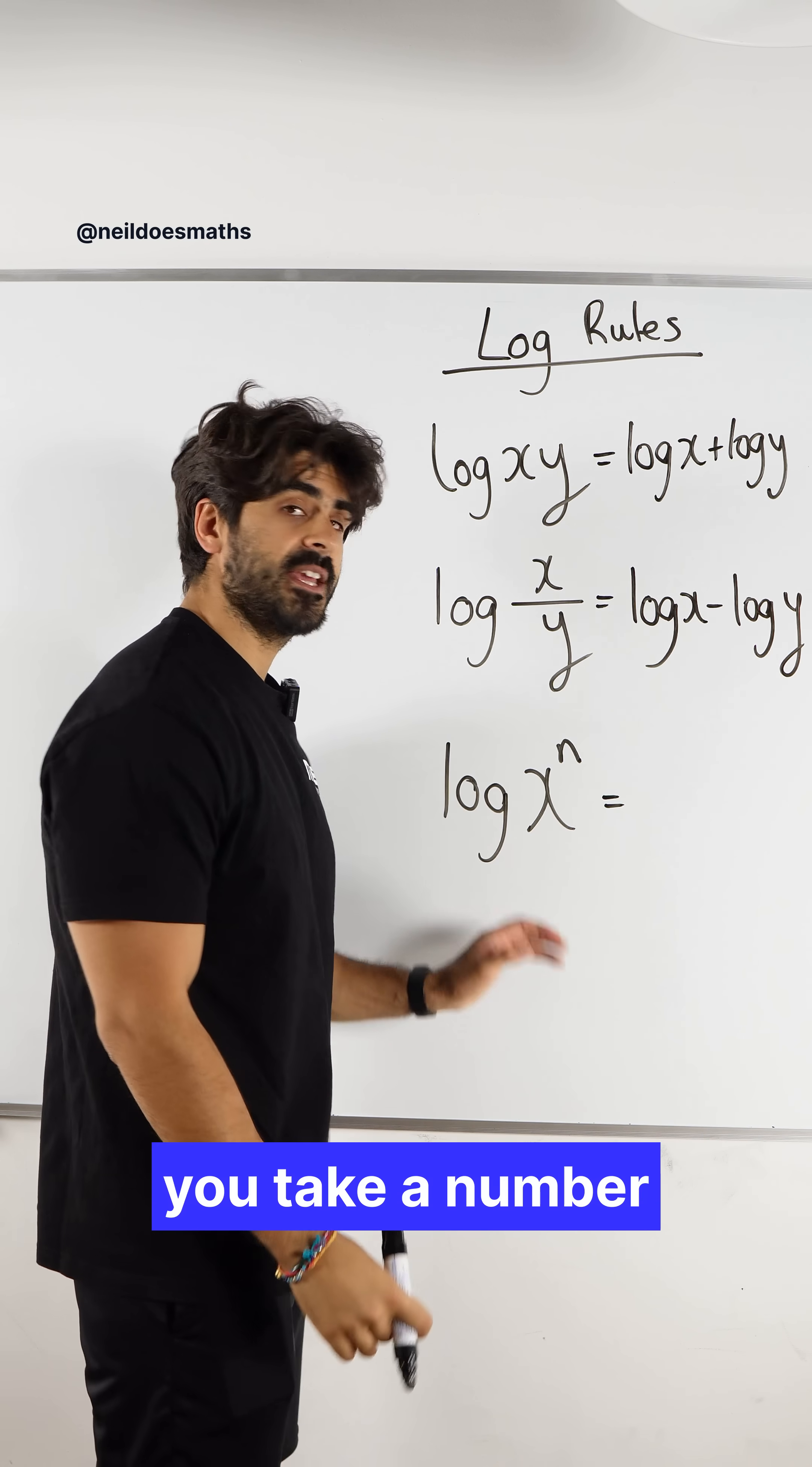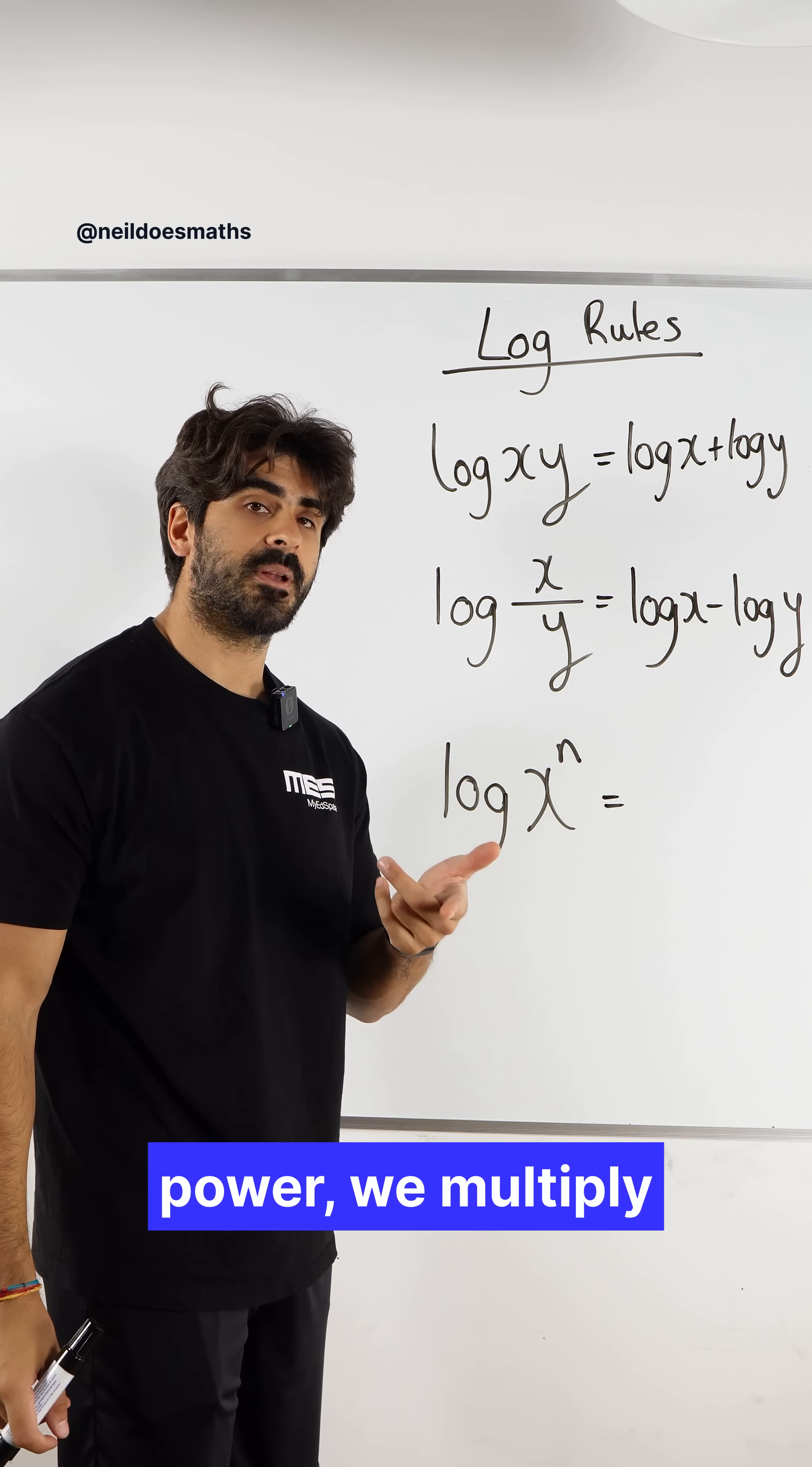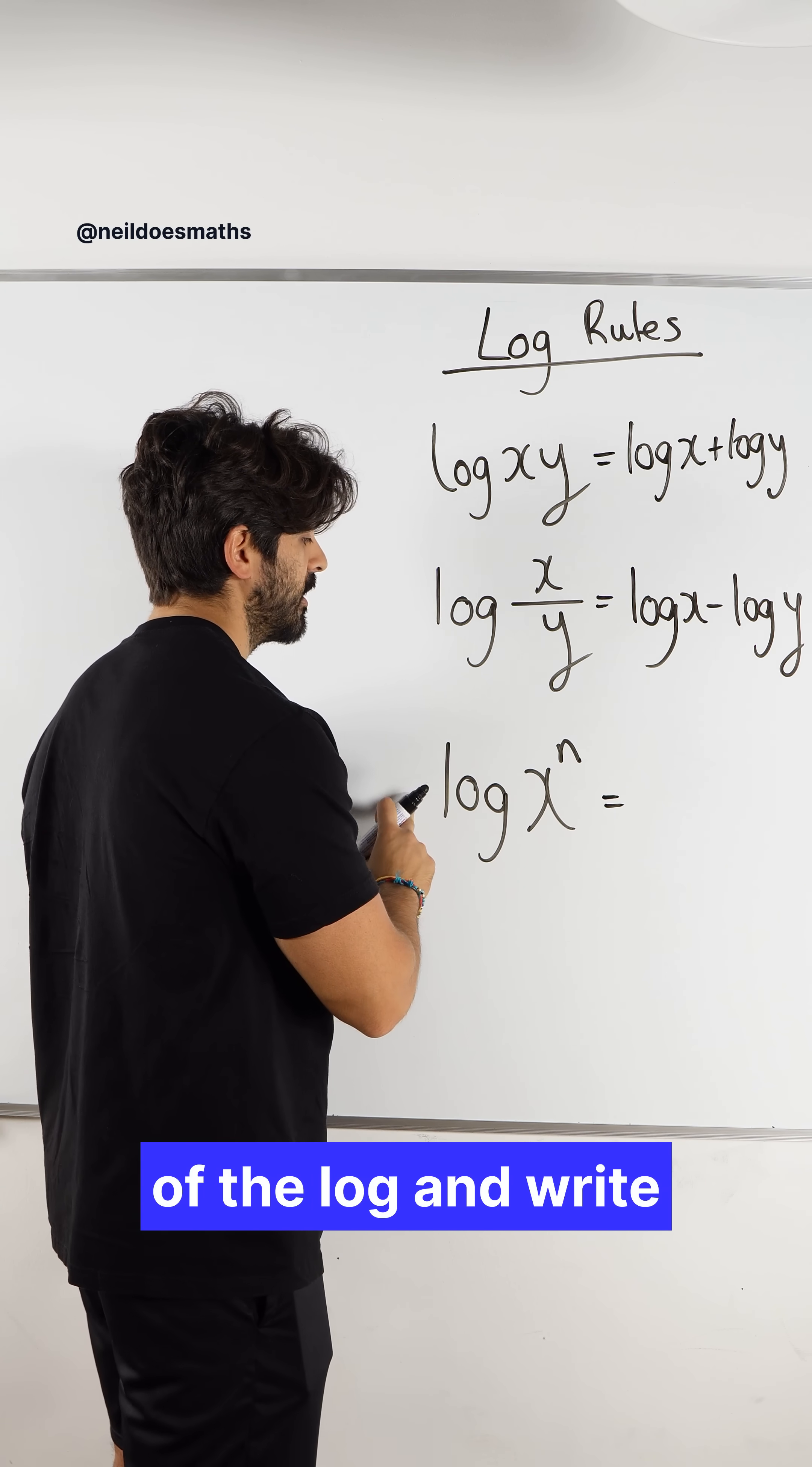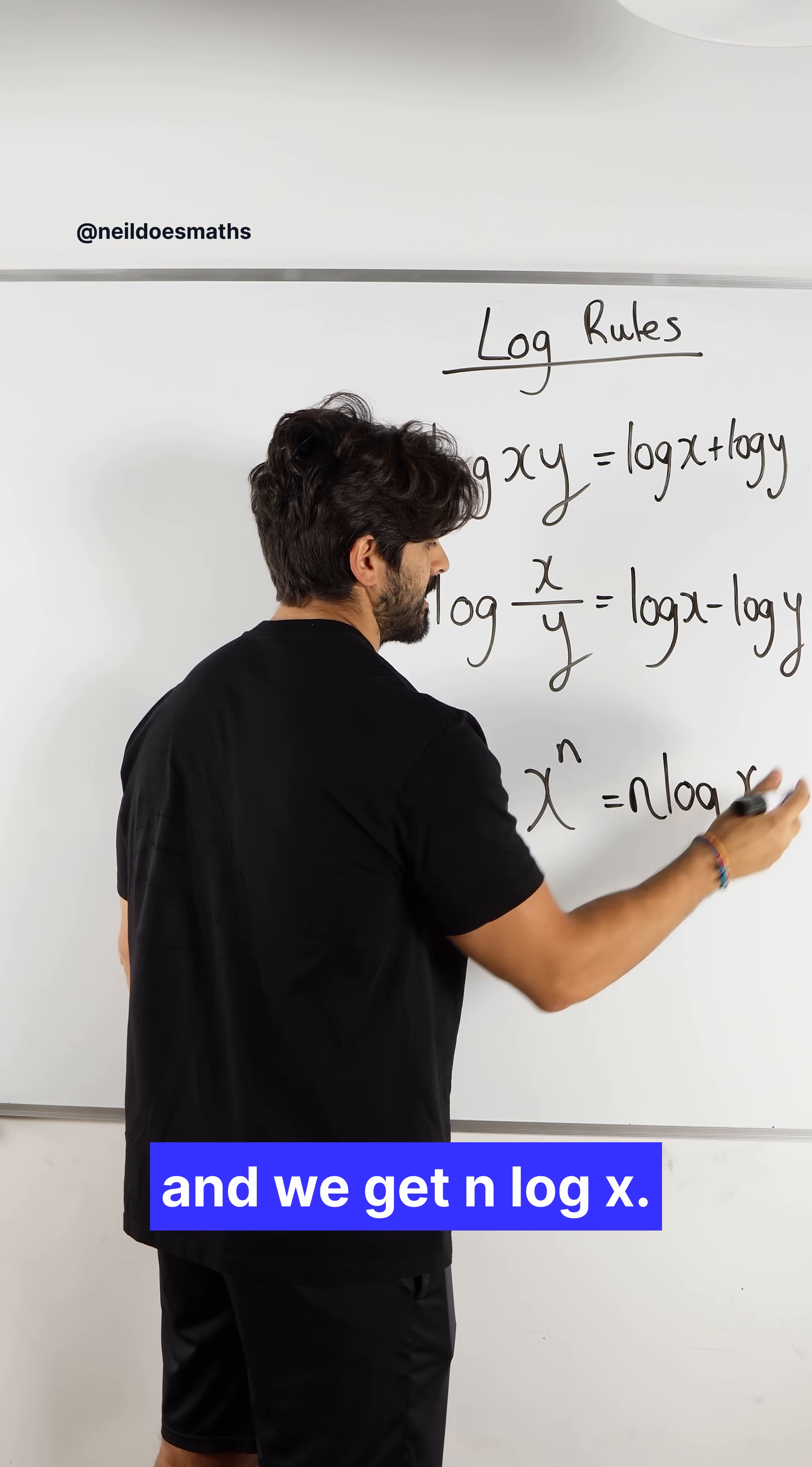And then finally, when you take a number raised to a power, because we're talking about powers, and we raise it to another power, we multiply the powers. So we can take this n, bring it to the front of the log, and write it as multiplication. So the n comes forward, and we get n log x.